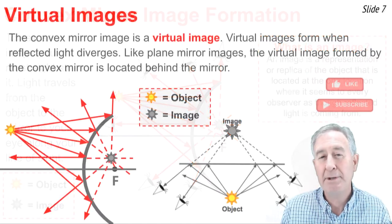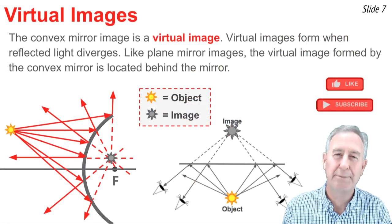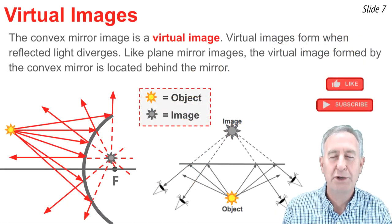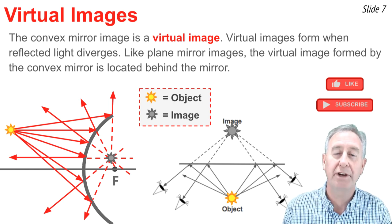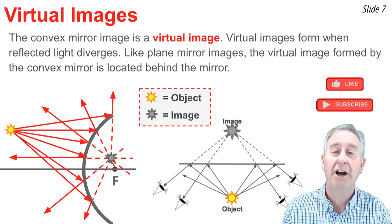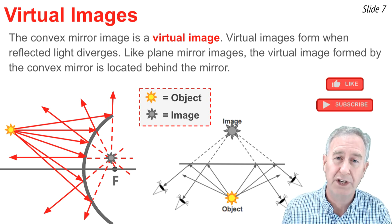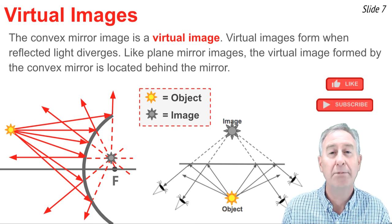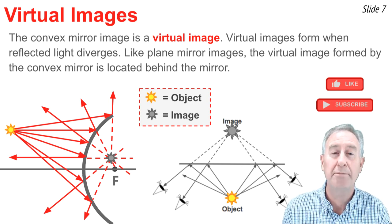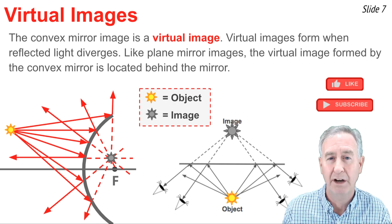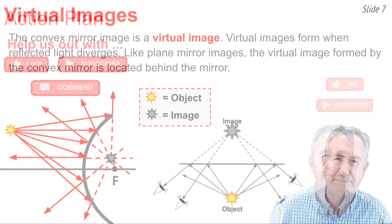The images formed by convex mirrors are virtual images. Virtual images form whenever the light rays that have reflected off the mirror are spreading apart or diverging. Like plane mirror images, virtual images are located behind the mirror at locations where light does not reach.